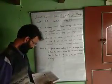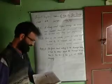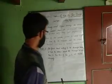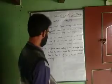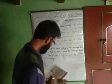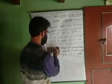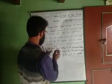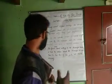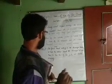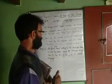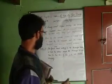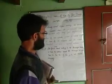The next question is: what did the first bird say to the stranger? The first bird said nothing directly to the stranger. It told the robbers about the stranger and asked them to rob him.